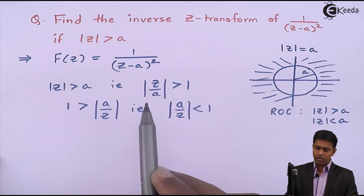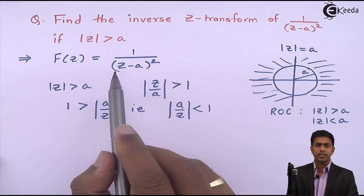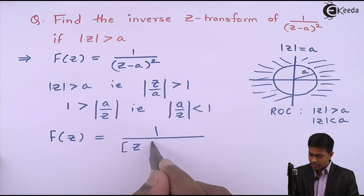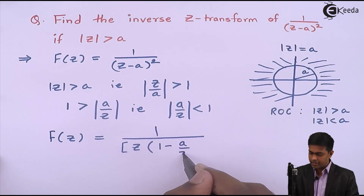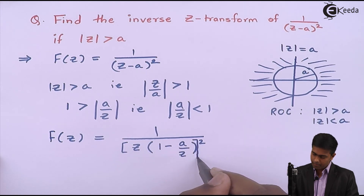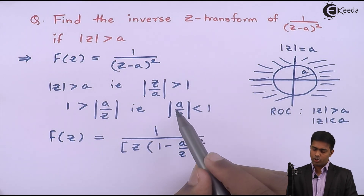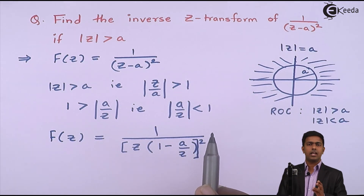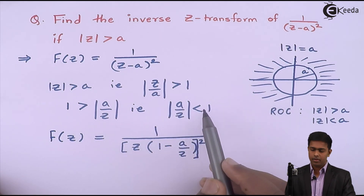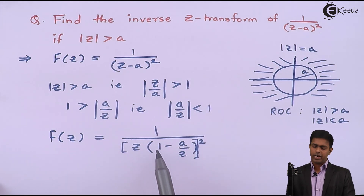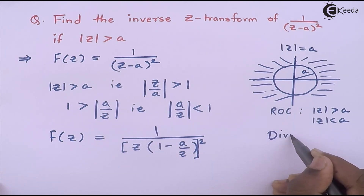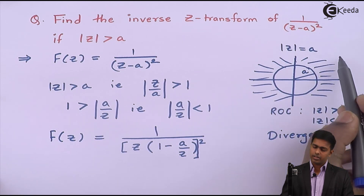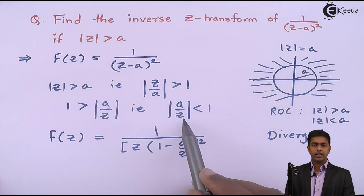In the given function, we take Z outside to get F of Z as 1 upon Z, and in the bracket we get 1 minus A by Z, the whole square. If A by Z is less than 1, then that value is less than 1. As soon as this value becomes 1, we get 1 minus 1, that is 0, giving an answer of infinity — meaning the series is divergent. Since we want a convergent series, the region of convergence is given, and therefore mod A by Z must be less than 1.